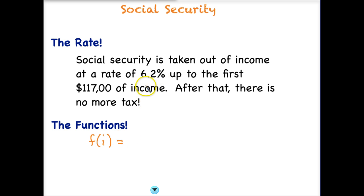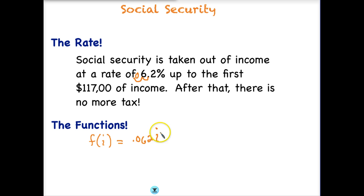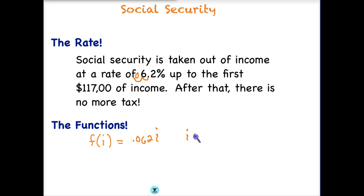So if we think about what this is, we're going to take our income and multiply it by 0.062. Remember that we need to change the percentage to a decimal — we move our decimal point two places. So we have 0.062 times whatever income we make. That's going to be our first function. But that assumes we make $117,000 or less, so I need to write that condition: our income has to be less than or equal to $117,000.